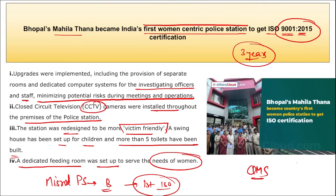Regarding ISO — the International Organization for Standardization — its headquarters is in Geneva, Switzerland, and it was established in 1947.